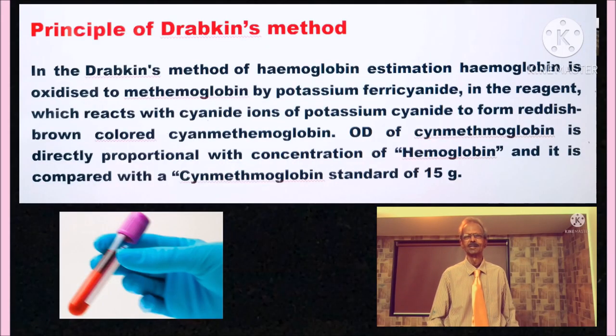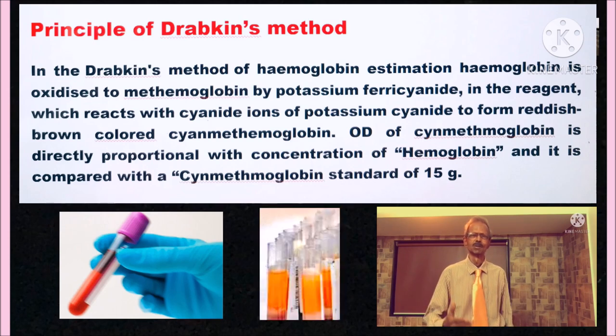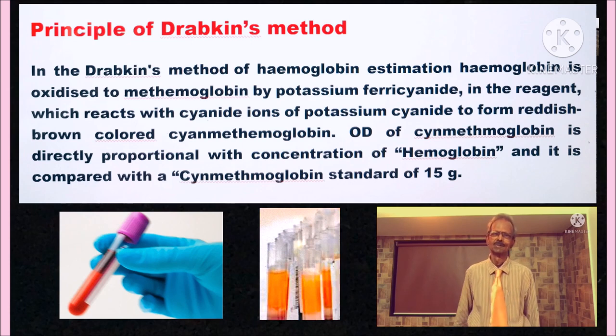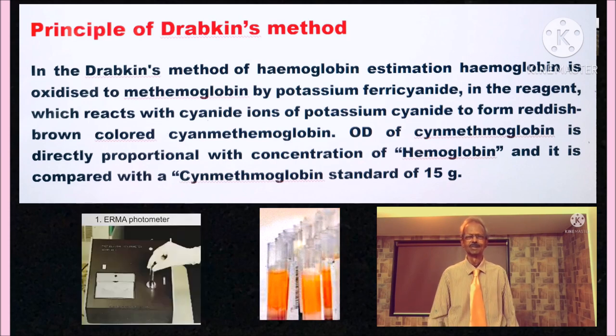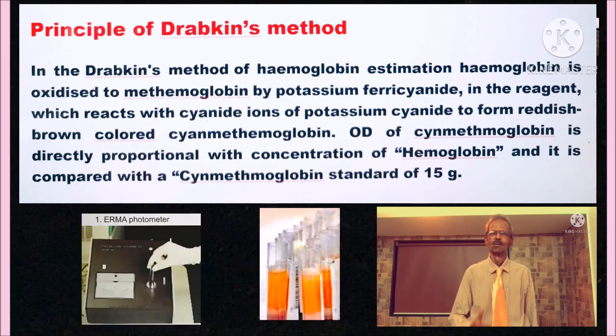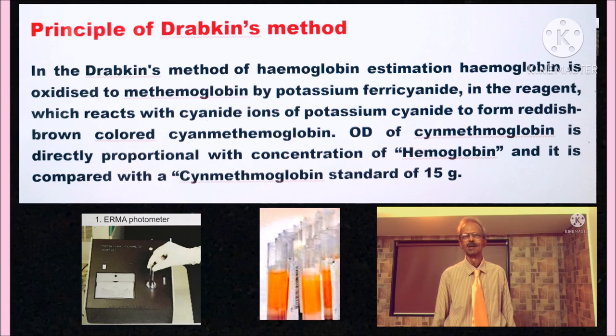Principle of Drabkin's method: In the Drabkin's method of hemoglobin estimation, hemoglobin is oxidized to methemoglobin by potassium ferricyanide in the reagent which reacts with cyanide ions of potassium cyanide to form reddish-brown color cyanomethemoglobin. Optical density of cyanomethemoglobin is directly proportional with concentration of hemoglobin in blood and it is compared with a cyanomethemoglobin standard of 15 grams.